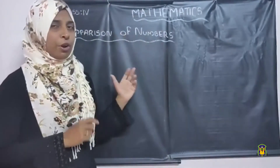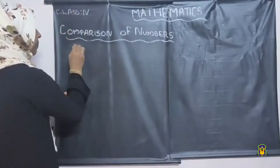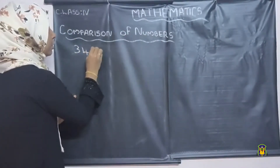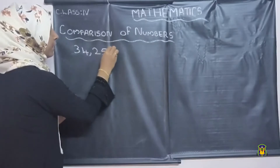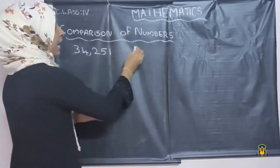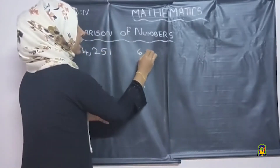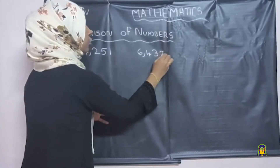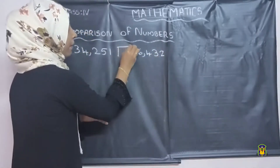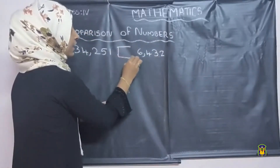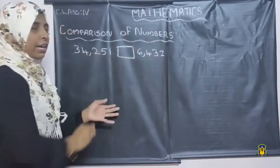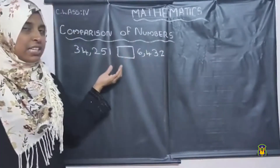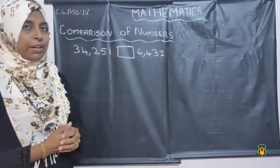So first I am going to write two numbers here: 34,251 and 6,432. I want to compare these two numbers. Look here children — the number of digits in each number.